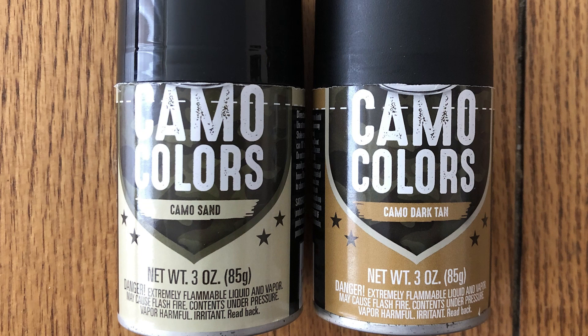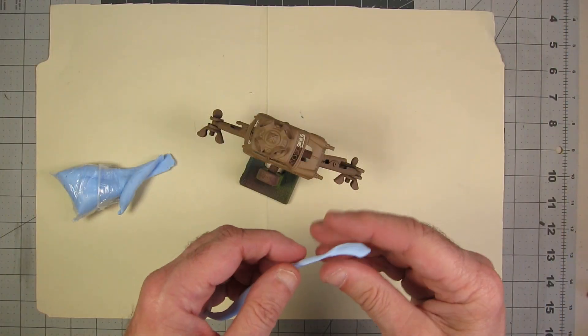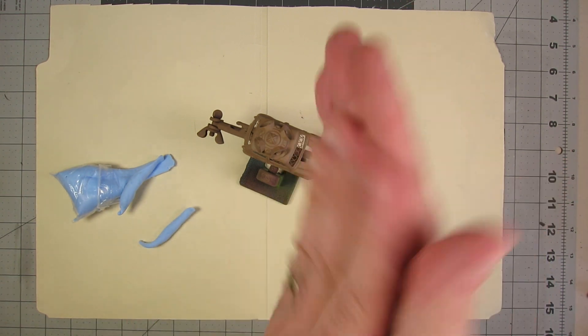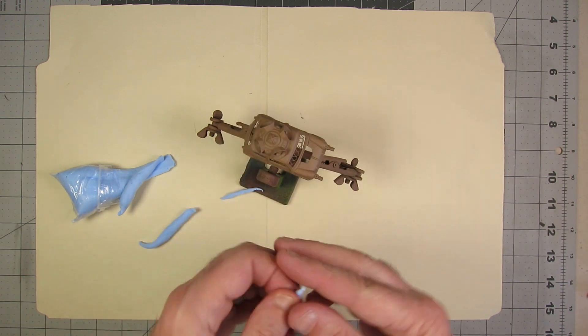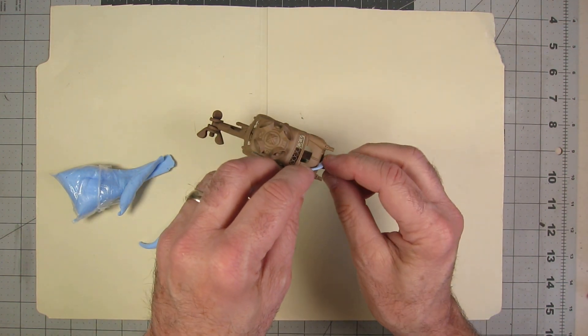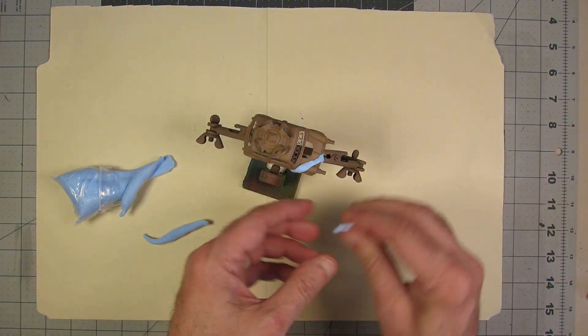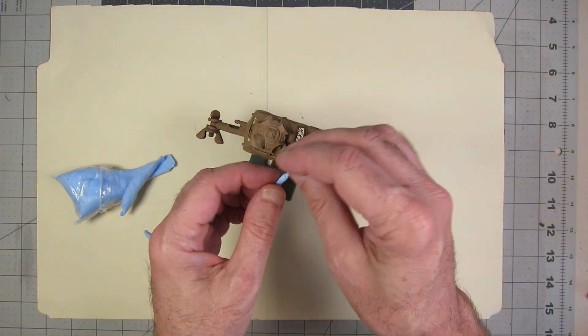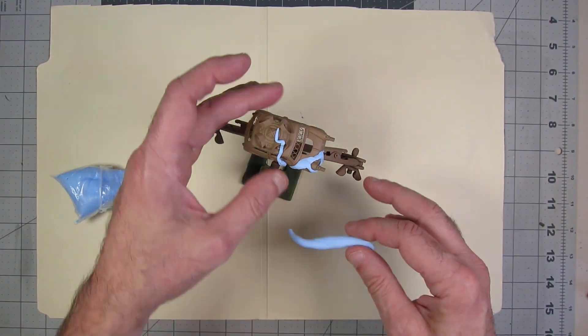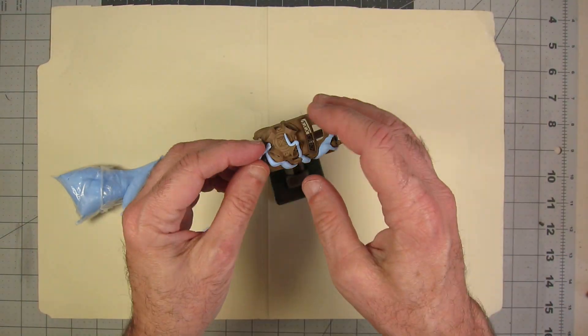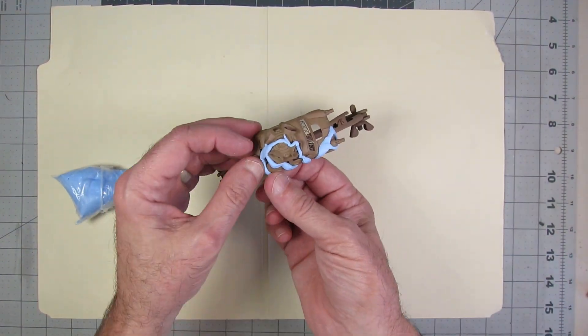Then it was camo time, and I went with Tester's camo colors, sand and dark tan. And there's a way that I just love doing camo that I first saw over on Danny's Die Cast Disasters. Hope Danny's doing well. Haven't seen any videos from him in a little while. Sure do miss those. They were very informational and inspirational. So hopefully he'll be back at it soon.